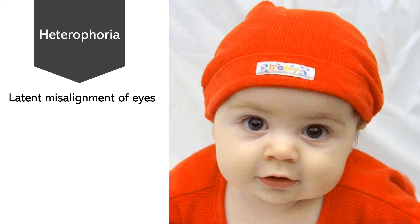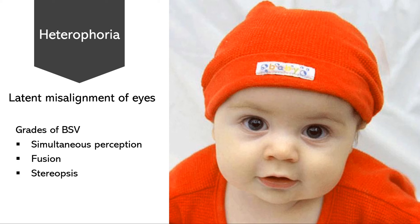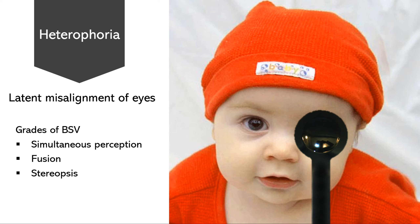This is also the principle of the cover test: breaking the fusion. The grades of binocular single vision are simultaneous perception, fusion, and stereopsis. In the cover test, we stop simultaneous perception by covering one eye. If there is no simultaneous perception, there will be no fusion and no stereopsis, and in the absence of fusion the squint which was hiding will become manifest.